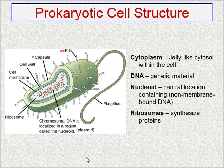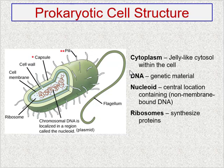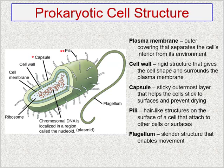Prokaryotic cells do not have a nucleus; however, they do have a region called the nucleoid, which is basically just the central location within the cell where the circular DNA is held. Surrounding the nucleoid region is the cytoplasm — the jelly-like cytosol found within all cells. Within the cytoplasm you'll find ribosomes floating around, synthesizing proteins. Surrounding the cytoplasm and holding it in is the plasma membrane, which is the outer covering that separates the cell from its environment.